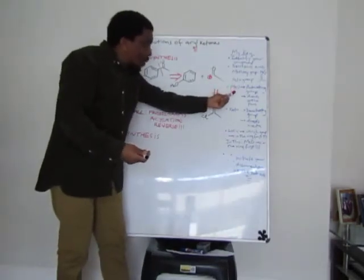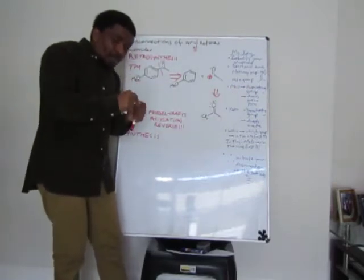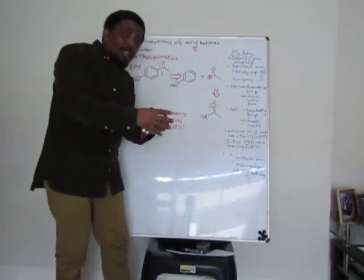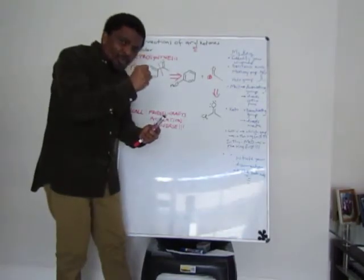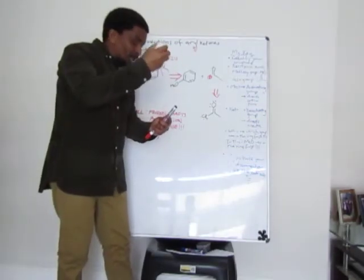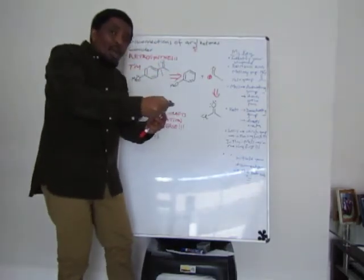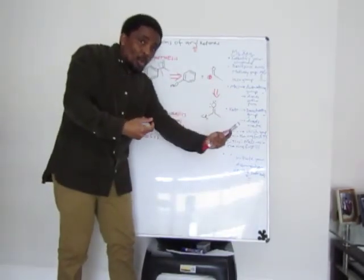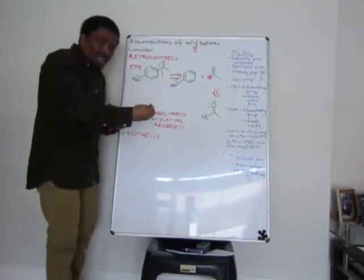Activating groups in aromatic benzene chemistry direct to the ortho position and the para position — that's very important. So if you've got a benzene ring substituted with a methoxy group, that methoxy group will direct whatever is coming into the ring to the ortho position or the para position.